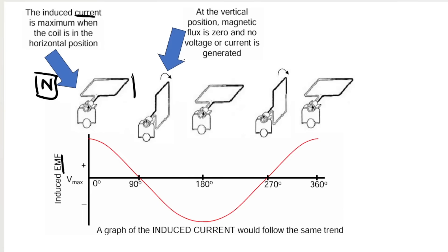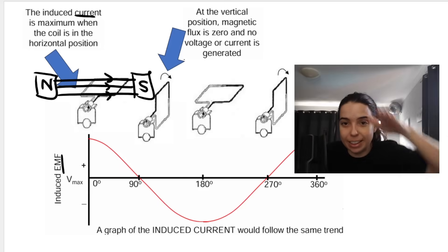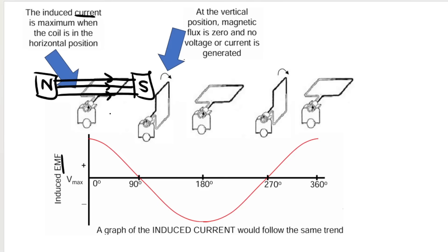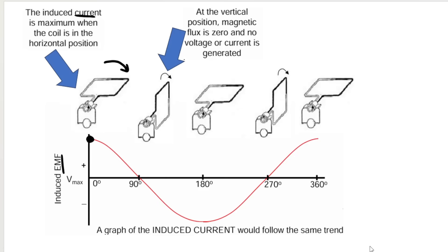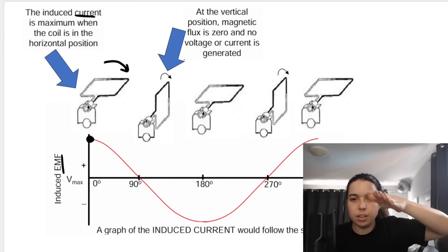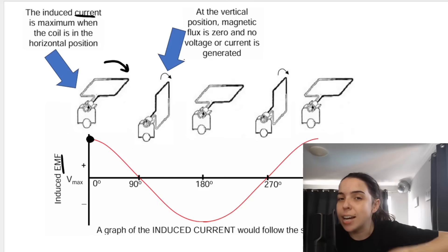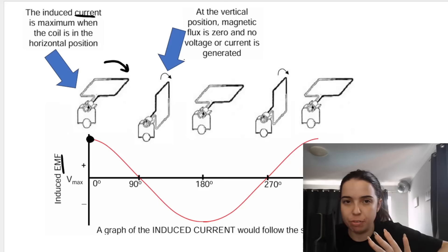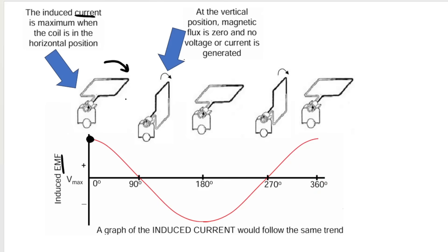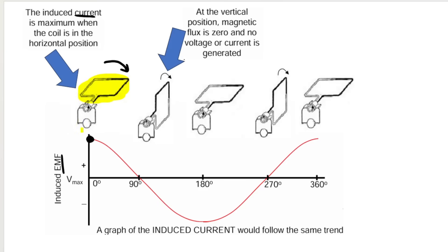The reason is that the magnetic field lines go from north to south across — and because the coil is lying flat, it is cutting through all those magnetic field lines. So the change in magnetic flux is at its greatest, which means the induced EMF is at a maximum. But when it rotates to its vertical position, the magnetic flux is zero — there's no voltage, no EMF, and no current generated. That's because all of the magnetic field lines are passing through the coil, not cutting it, so there's no change in magnetic flux. The horizontal position corresponds to a maximum on the graph, and the vertical position corresponds to zero voltage.